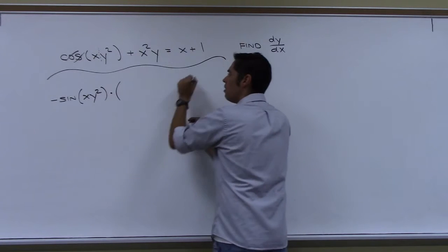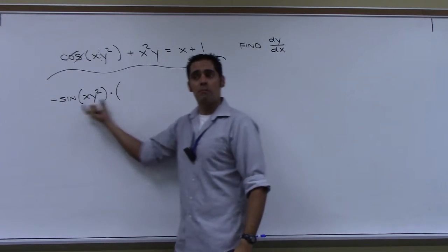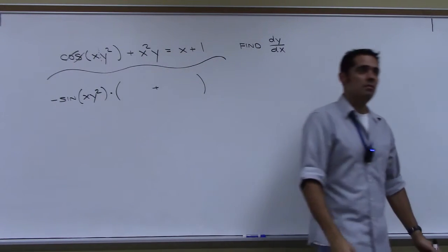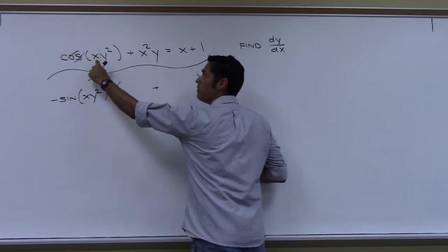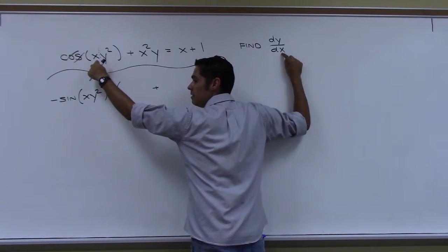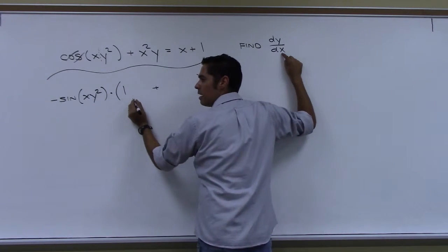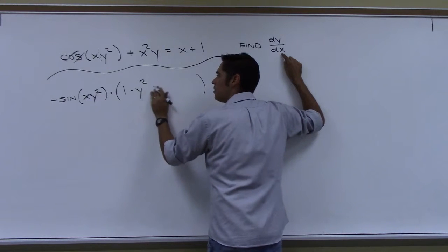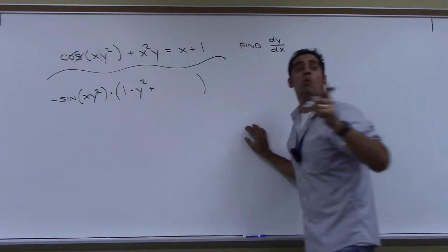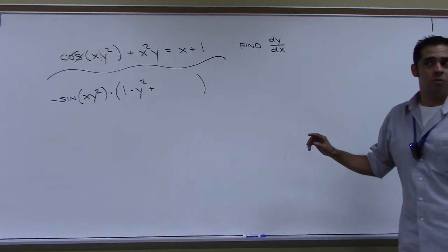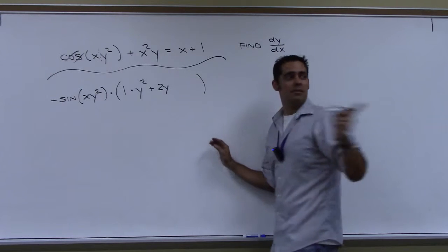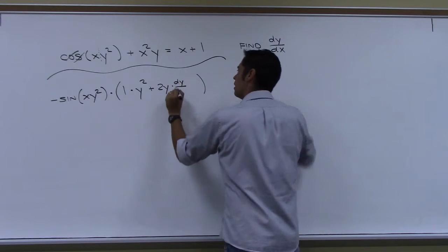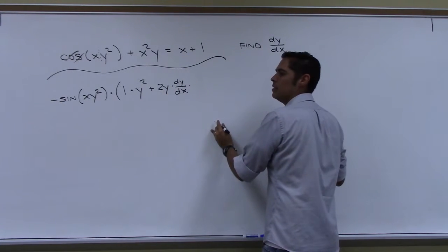That gives me two things, so I put it all in parentheses. The first piece: derivative of x with respect to x is 1, times y squared. Plus the derivative of y squared — carefully, that's 2y times dy/dx — times x.